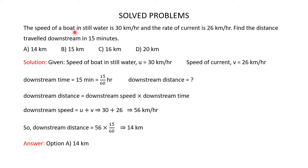The speed of the boat in still water is 30 km/h and the rate of the current is 26 km/h. Find the distance traveled downstream in 15 minutes. The downstream time is 15 minutes; since units are in km/h, we convert: 15 minutes equals 15 divided by 60 hours. We are asked to find the downstream distance.